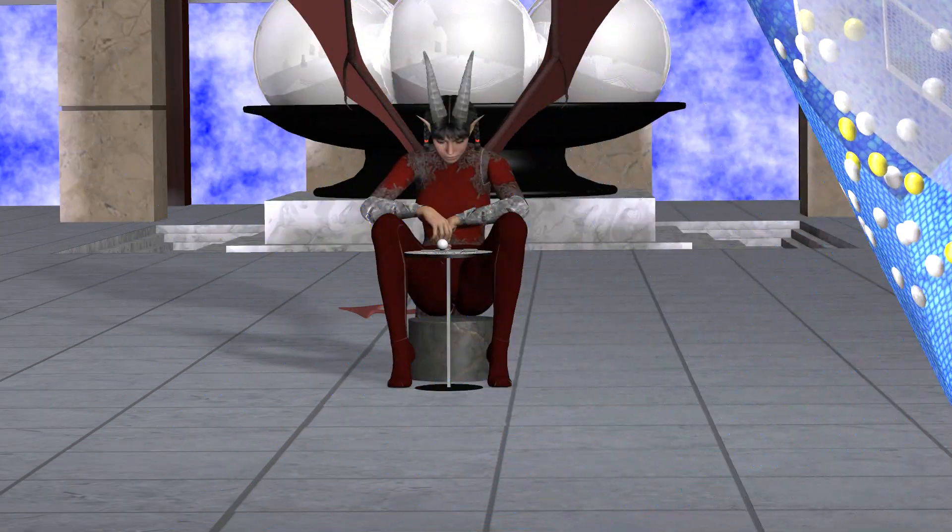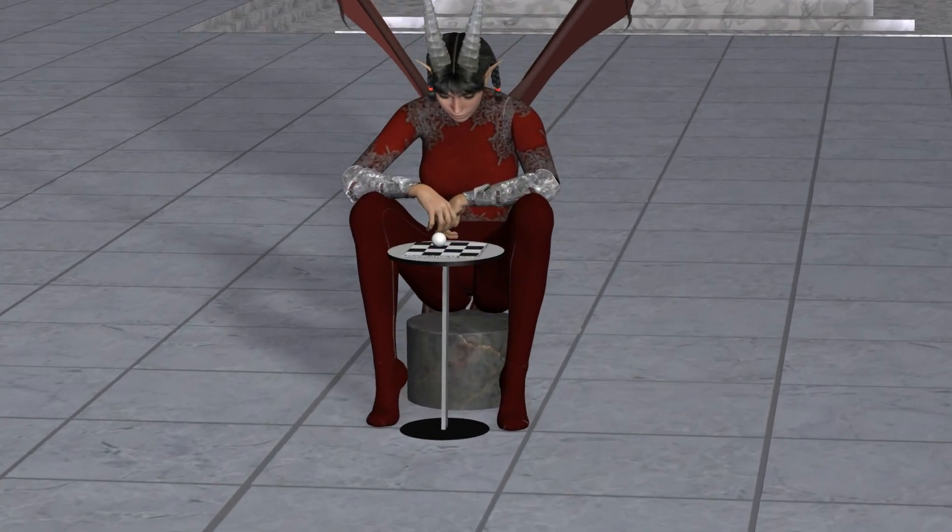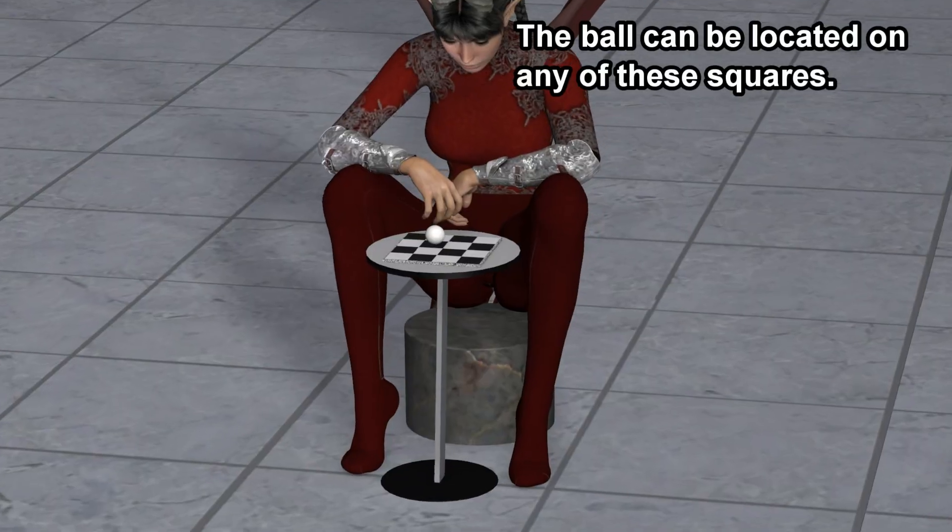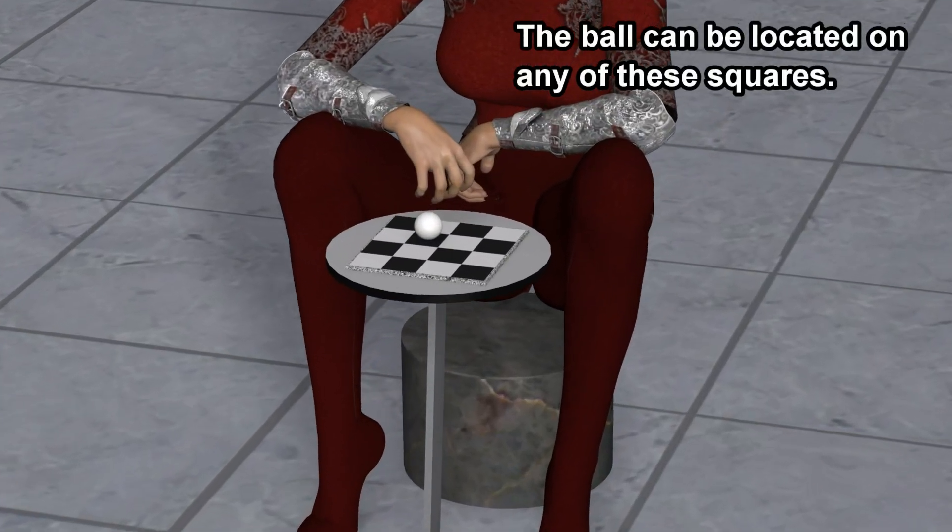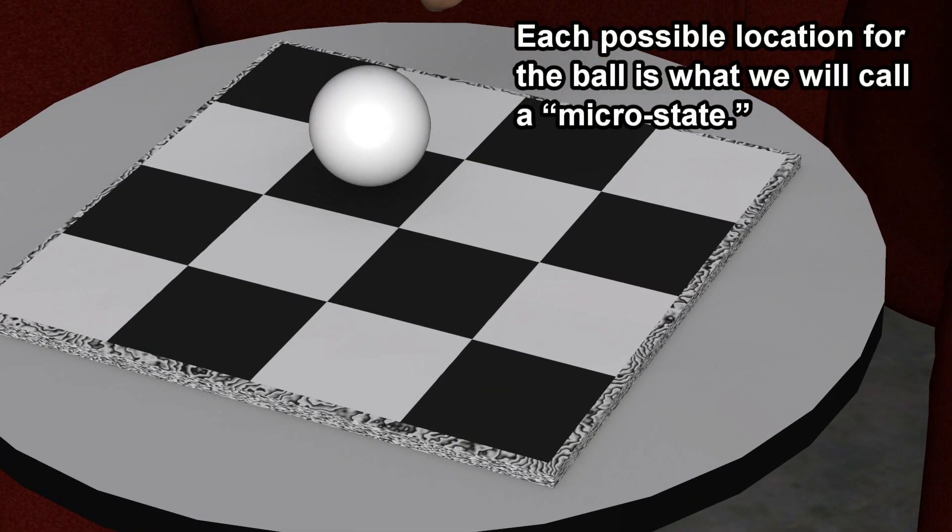To understand why information is entropy, consider the following. The ball can be located on any of these squares. Each possible location for the ball is what we will call a microstate.